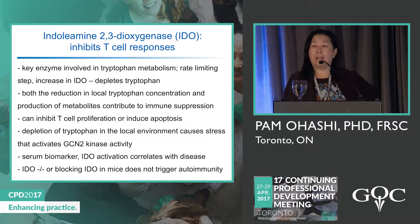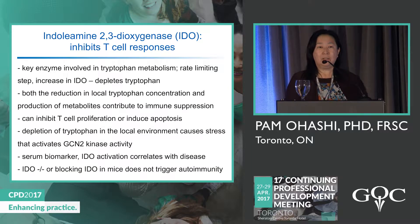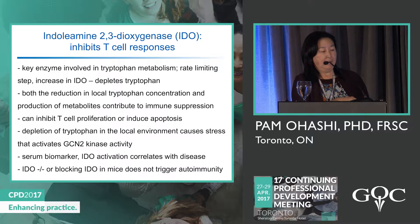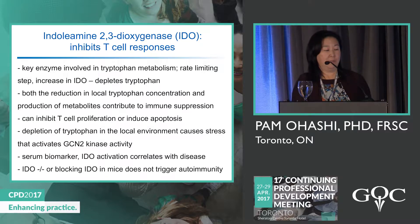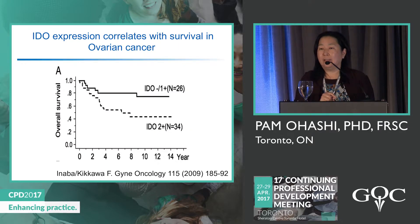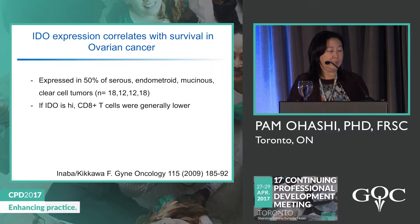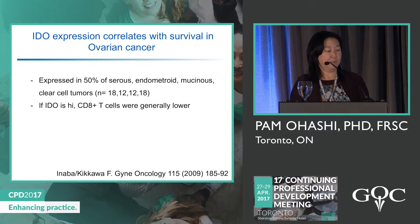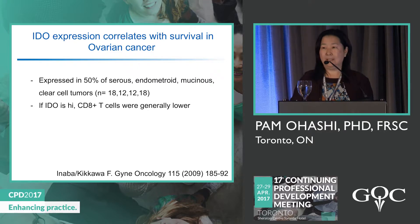Studies asking how patients do with high IDO levels show they do quite poorly — the lower dotted line. Patients with low or negative IDO do much better. In a 2009 study, IDO was expressed in 50% of serous, endometrioid, mucinous, and clear cell tumors, and when IDO was high, CD8-positive cytotoxic T cells were generally lower.